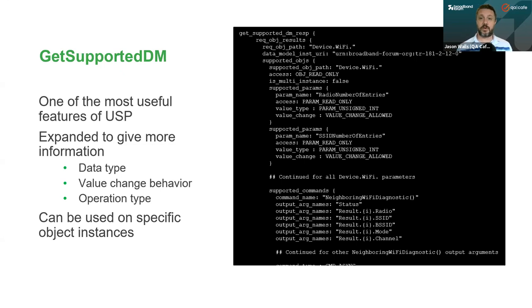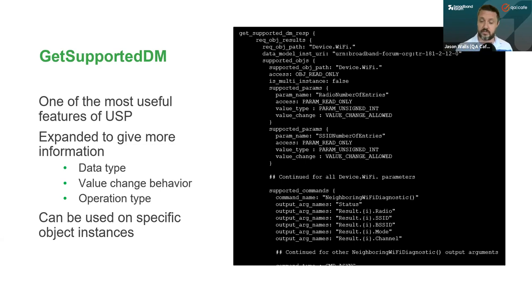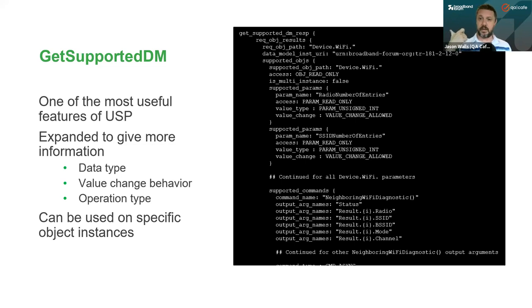We're also adding the ability to use Get Supported Data Model on an object instance. Normally when you do Get Supported DM, you ask what the agent supports and it reports back its supported data model without giving you what instances currently exist. But if you happen to know of a particular instance that does exist, you can query Get Supported DM on just that instance, and it will report the supported parameters, objects, commands, and events that that specific instance supports. This is based on work to better support independent pieces of software being loaded on gateways, or proxy devices managed through the agent.